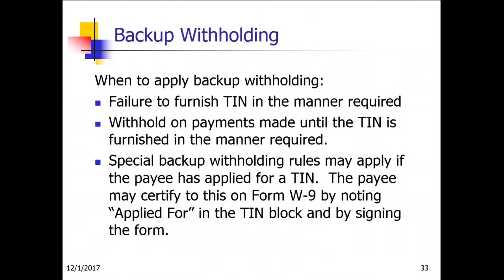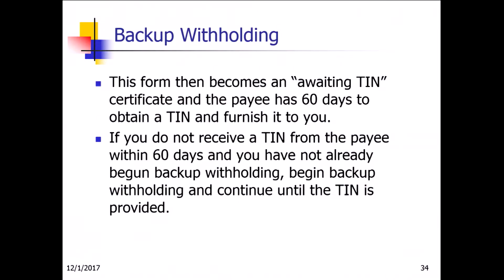Backup withholding applies when a contractor fails to provide you with their tax ID number. When they fill out the W-9 form and you receive it, it's considered applied for, so you wouldn't start backup withholding until 60 days after that point.